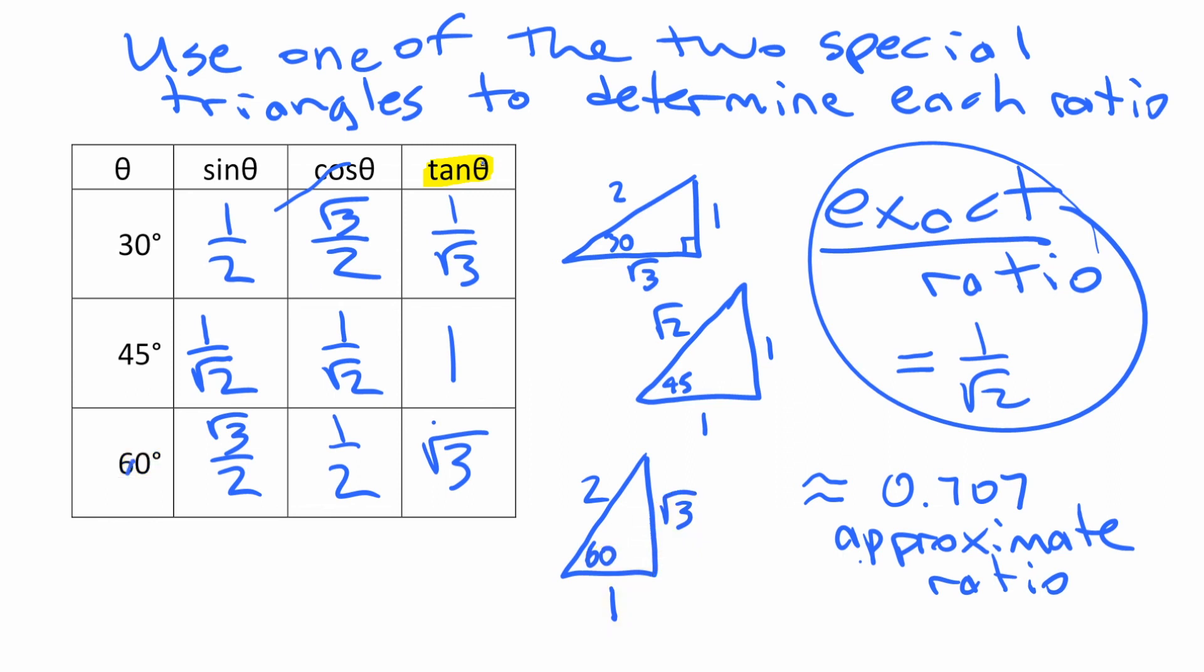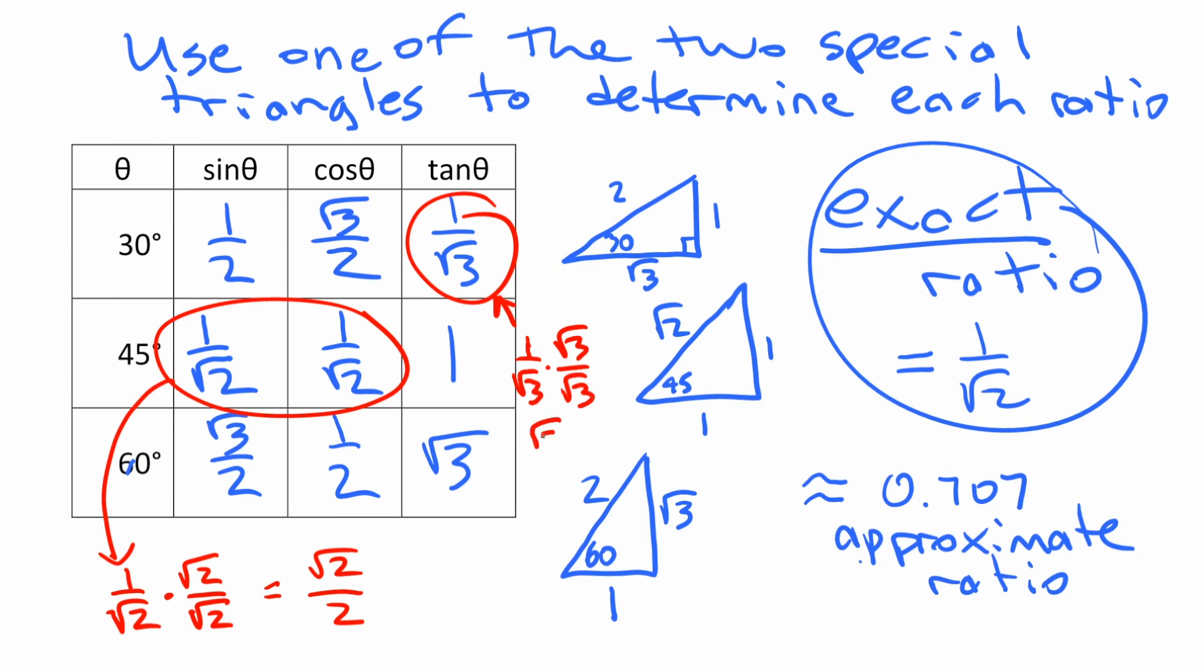Now one last thing we're going to look at here is, a few of these you can simplify. These two and this one have square roots on the bottom. And what you can do is, for this one say, you can multiply by root 2 over root 2, so that on the top you have root 2, but on the bottom you have 2, which is not a square root anymore. Sometimes it's better to have fractions that do not have roots in the bottom. Similarly for this one, 1 over root 3, you could multiply by root 3 over root 3. It doesn't change the value, it just makes it root 3 over 3. No square root in the bottom. It's not required, but it's worth knowing that those are equivalent ratios.